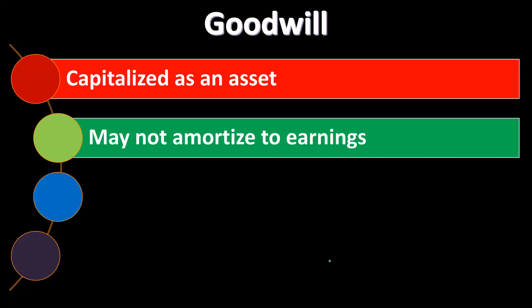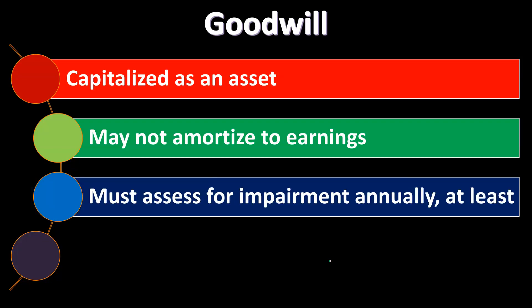So what do we do with goodwill? It's going to be capitalized as an asset — an intangible asset, similar to property, plant, and equipment. We do not depreciate or amortize it, because you can think of it like land: goodwill is something that could last indefinitely. We keep it on the books and instead must assess for impairment annually. Rather than allocating its cost through depreciation, we test it periodically to ask: is this goodwill still valid? If there is impairment, we don't want to overstate the financial statements, so we must write it down.